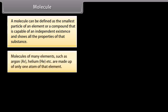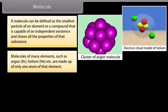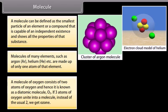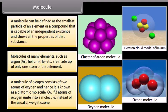Molecules of many elements such as Argon, Helium, etc. are made up of only one atom of that element. A molecule of Oxygen consists of two atoms of Oxygen and hence it is known as a diatomic molecule, O2. If three atoms of Oxygen unite into a molecule instead of the usual two, we get ozone.